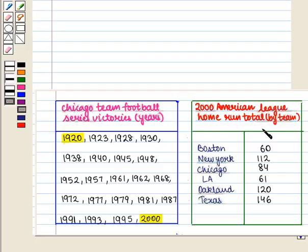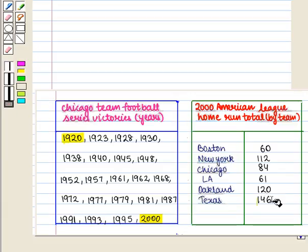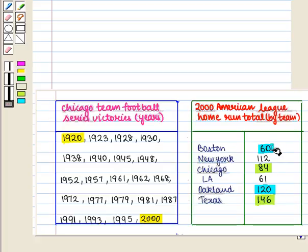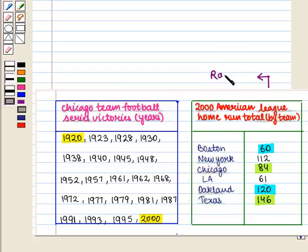However, in the second table using the homerun total you can find differences and write ratios. From the data you can see that Texas hit 62 more homeruns than Chicago hit. Also, Oakland hit about two times as many homeruns as Boston hit. So these data are at the ratio level.